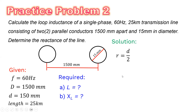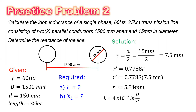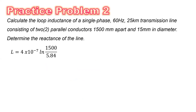First, we need to solve for the radius, which is equal to diameter divided by 2. So 15 mm divided by 2 is 7.5 mm. Now we can solve for R prime, or the GMR, which is equal to 0.7788 times R. Plugging in the computed value of radius, which is 7.5 mm, we get R prime equal to 5.84 mm. Now with the separation distance and R prime known, we can solve the inductance: 4 times 10 to the negative 7, ln of 1500 divided by 5.84, giving 2.22 times 10 to the negative 6 Henry per meter.